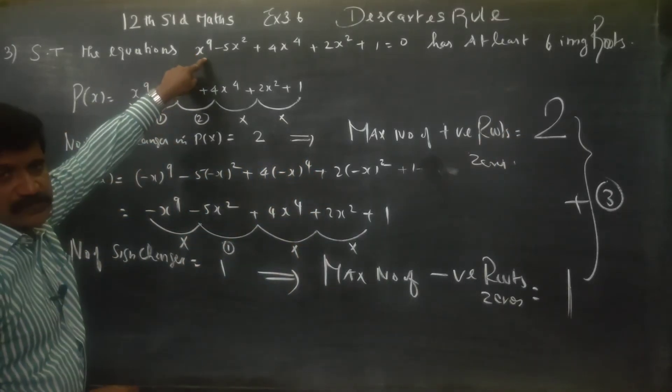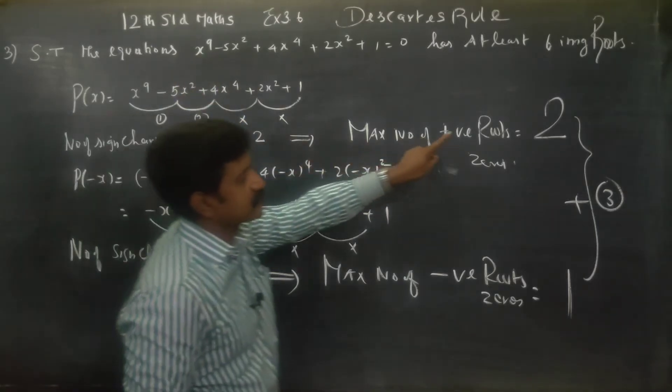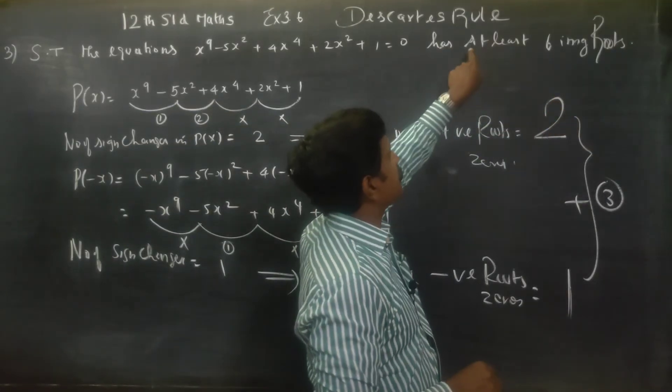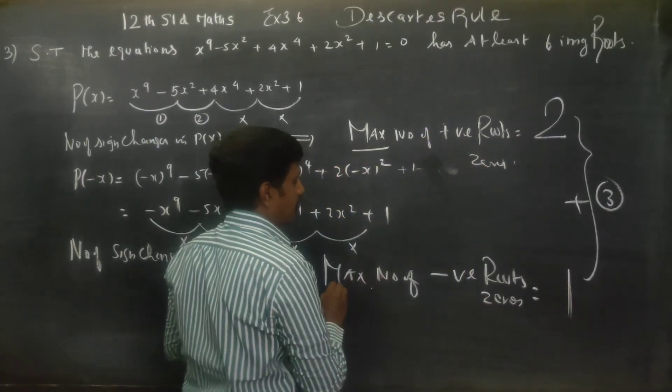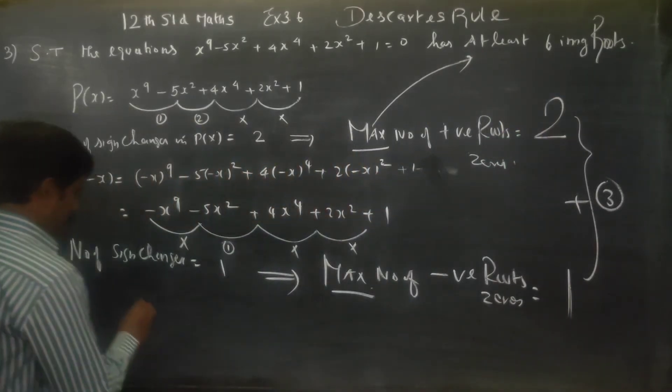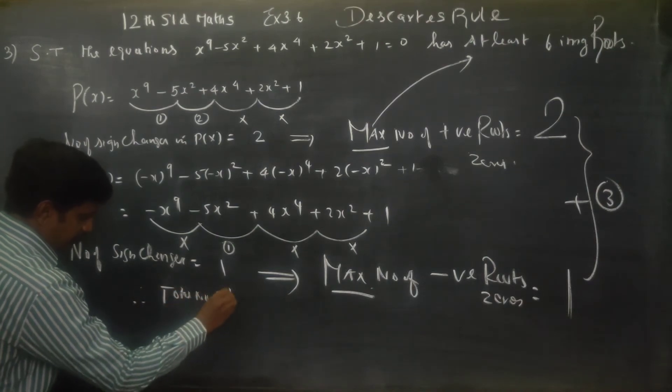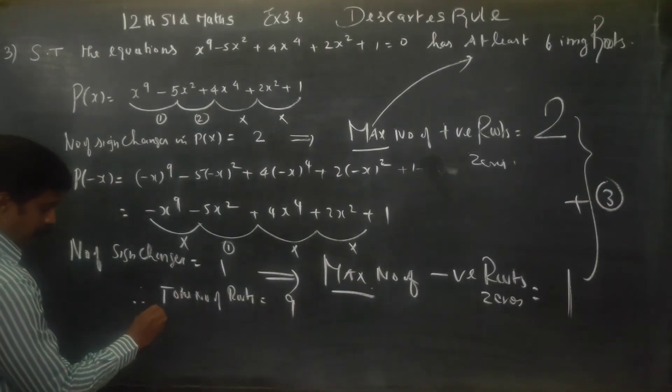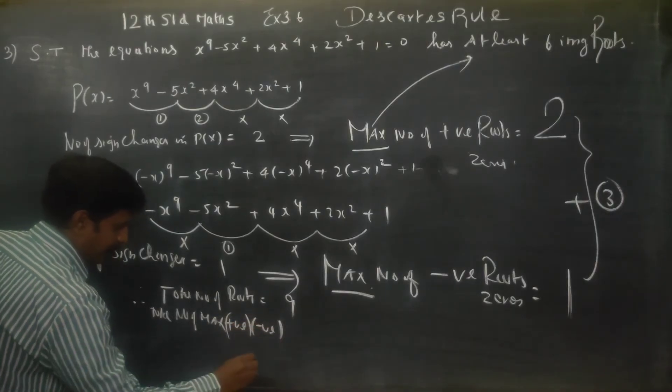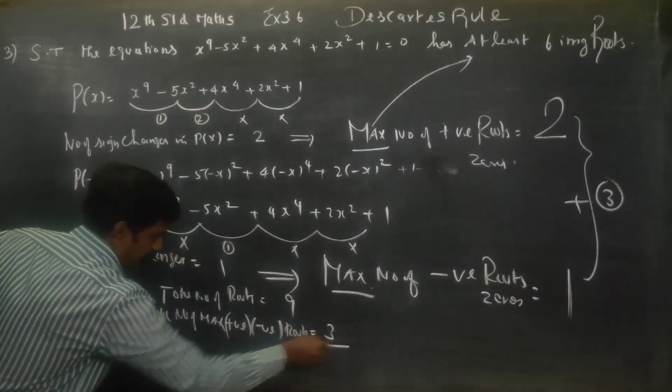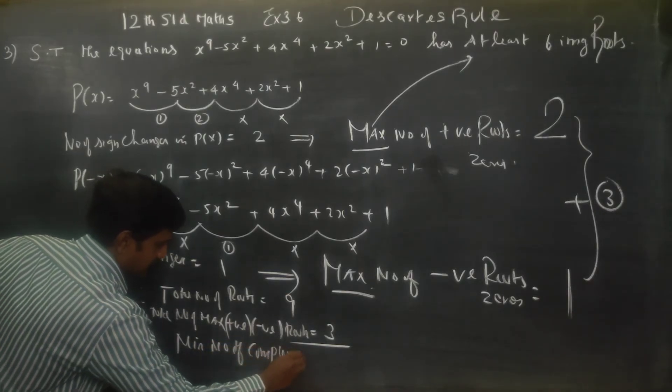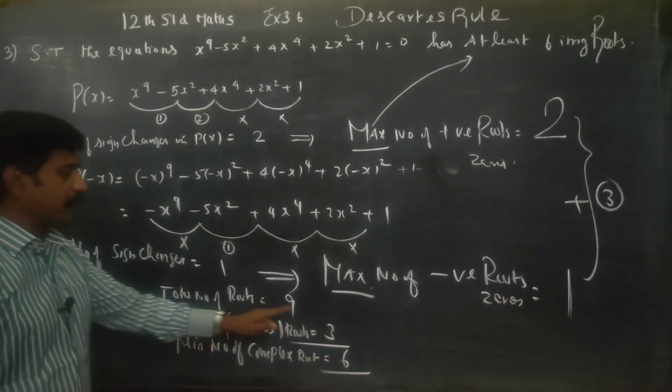Actually number of roots 9. 9 minus 3 is 6 imaginary roots. At least, the maximum. Minimum at least imaginary roots. Therefore, total number of roots is equal to 9. Total number of maximum positive and negative roots is 3. Therefore minimum number of complex roots is equal to 6.